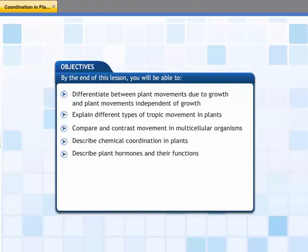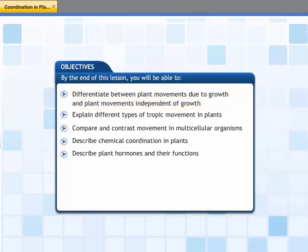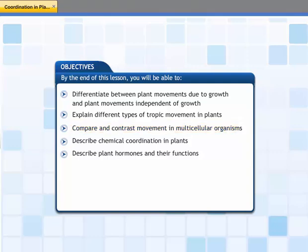In this lesson you will learn about the types of coordination in plants. At the end of this lesson you will be able to: differentiate between plant movements due to growth and plant movements independent of growth; explain different types of tropic movement in plants; compare and contrast movement in multicellular organisms; describe chemical coordination in plants; and describe plant hormones and their functions.